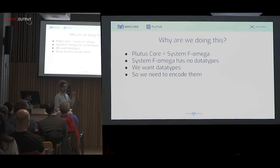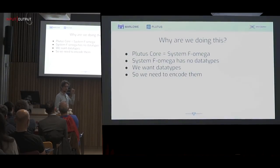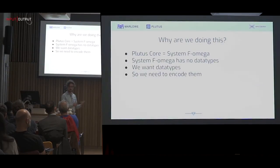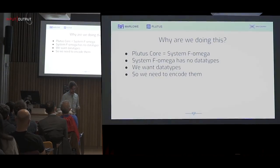But we do want data types. We want to be able to reason about them. Part of what we're trying to do in the long run is to have a system where people can write pretty much Haskell and have it turn into Plutus Core that runs on the blockchain. And Haskell has data types. So we need some way to encode them. And Phil has already told you about that. There's a number of well-known ways of doing this.